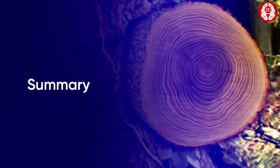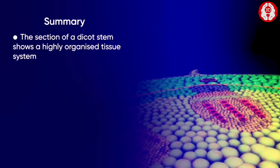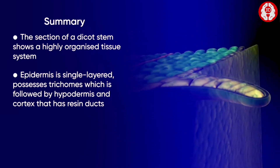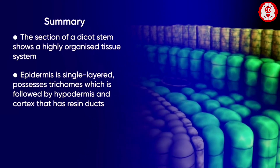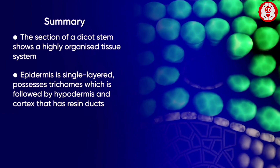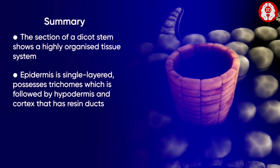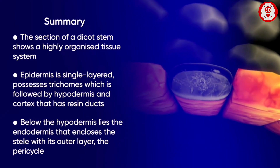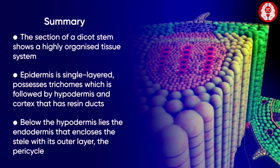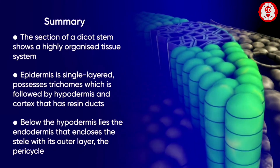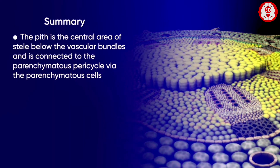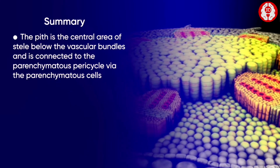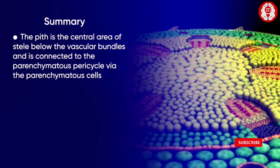To summarize: the section of a dicot stem shows a highly organized tissue system. The epidermis of the stem is single-layered and possesses trichomes. Below the epidermis is the hypodermis, then the cortex which shows resin ducts. Below the hypodermis lies the endodermis, or starch sheath. The endodermis encloses the stele, and its outer layers are called the pericycle.